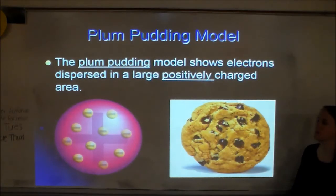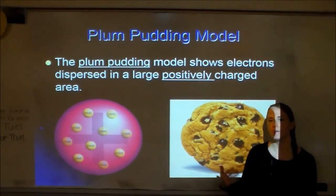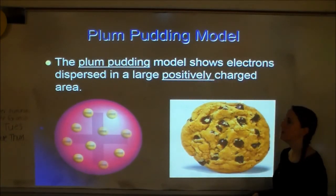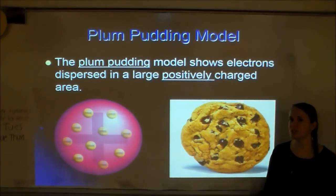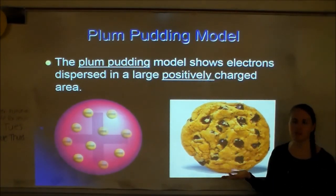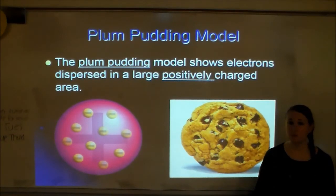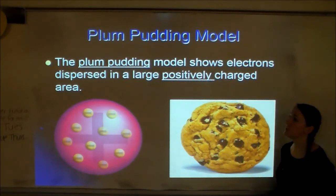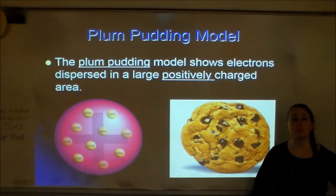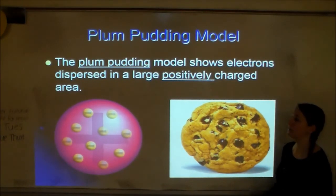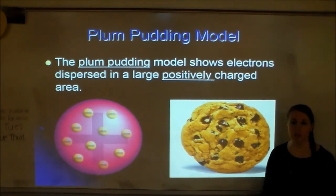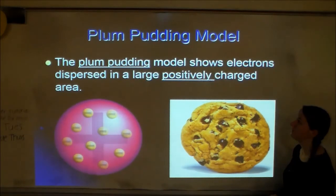Now let's start talking about models of the atom. Where we left off was Democritus and Dalton, who said atoms are indivisible and there are different types of atoms. Eventually, scientists tried to make models for atoms. So when J.J. Thompson discovered electrons, he decided he needed to update the model of the atom.